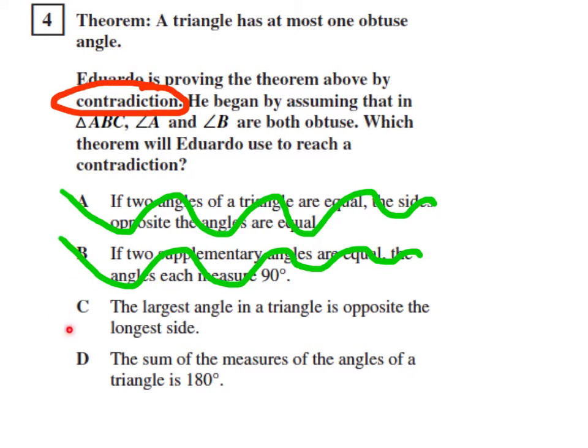Looking at C here, the largest angle in a triangle is opposite the longest side. Okay, again, another useful observation in geometry. But, it's not going to help us arrive at a contradiction regarding having two obtuse angles in a triangle.